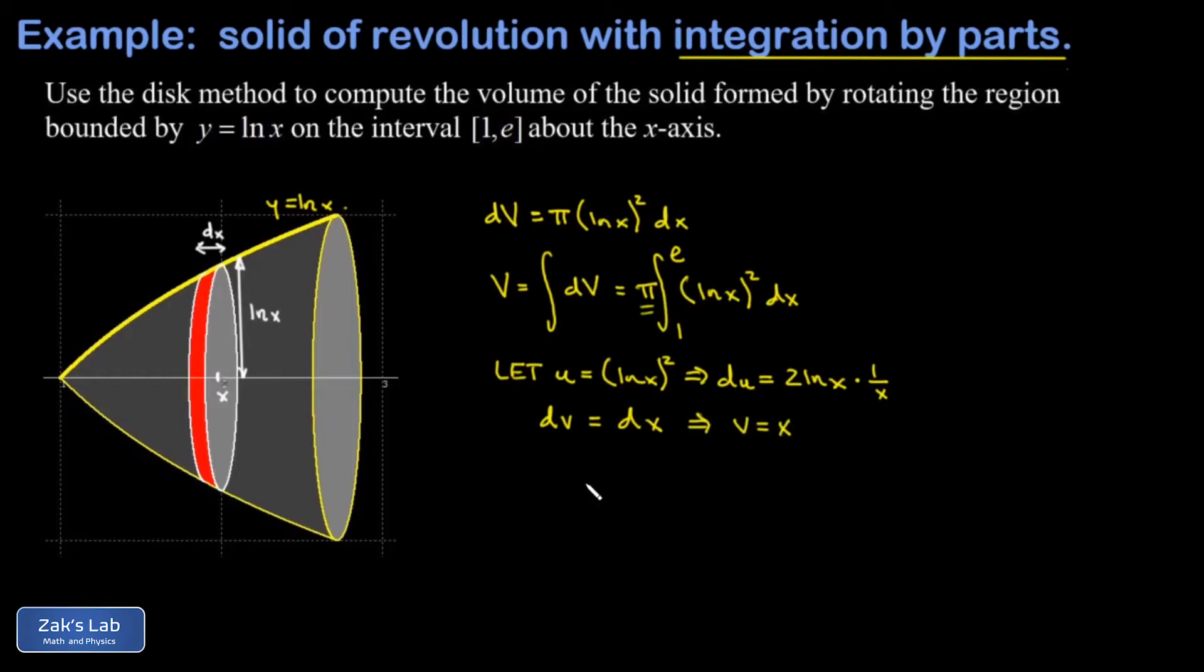We apply the integration by parts formula and I start with u times v. That's x times natural log of x all squared, evaluated on the interval 1 to e. And again there's a pi out in front of this whole thing.